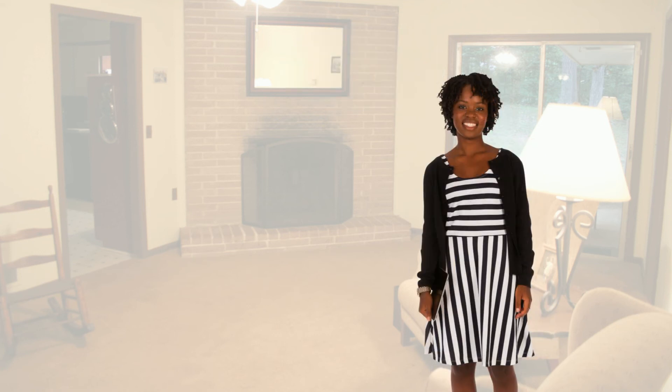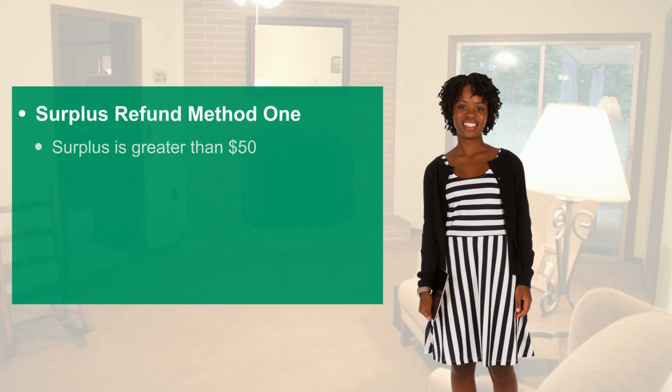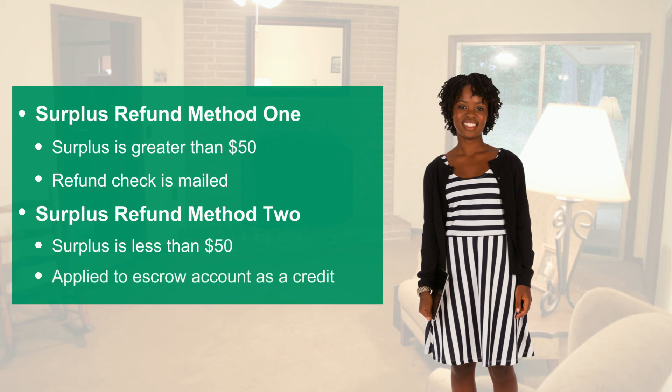Virginia Housing will refund the surplus amount in one of two ways. Since Tanya's surplus amount is greater than $50, Virginia Housing will mail a check to her within 30 days of when she received the escrow disclosure. However, if Tanya's surplus amount was less than $50, Virginia Housing would apply the amount as a credit to her mortgage escrow account. This means her regular monthly mortgage payments would decrease temporarily until the credit was applied in full.